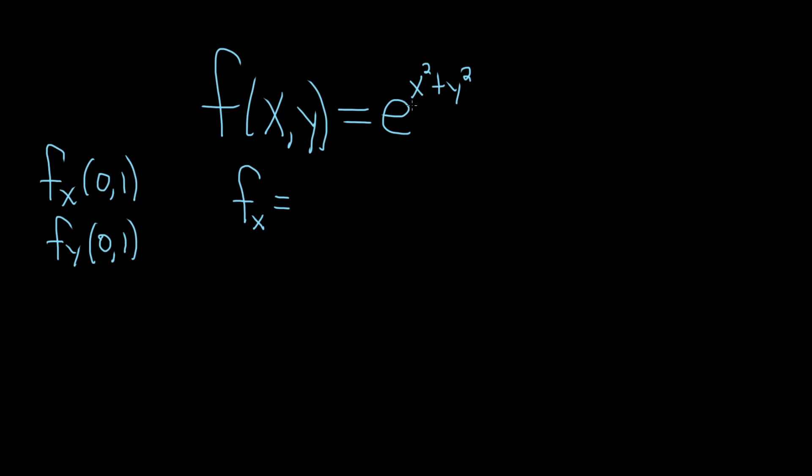So the derivative of e to the x is e to the x, so here it's just e to the x squared plus y squared, and then we multiply by the derivative of the inside. That's the chain rule. So the derivative of the inside is simply going to be 2x because the derivative of x squared is 2x, and the derivative of y squared is 0 because we're differentiating with respect to x, and all of the y's are constants. So this is going to be 2x e to the x squared plus y squared.